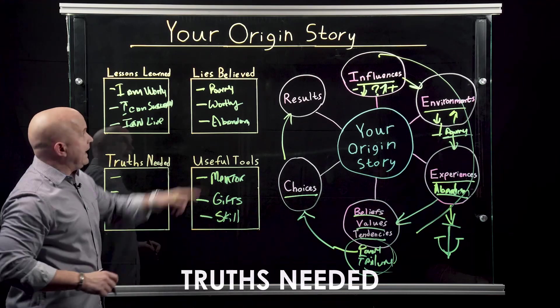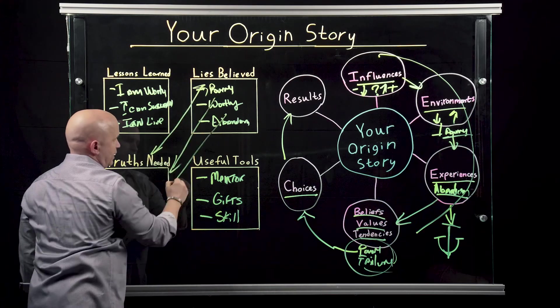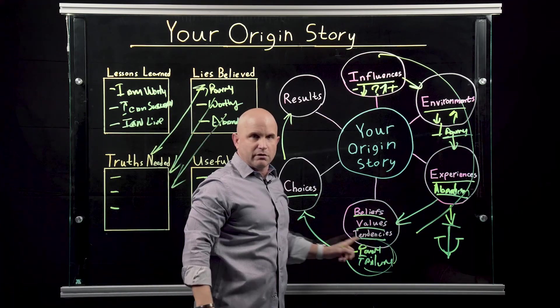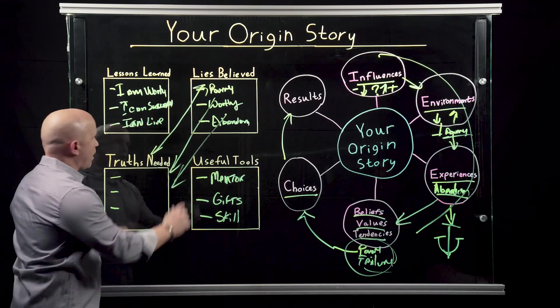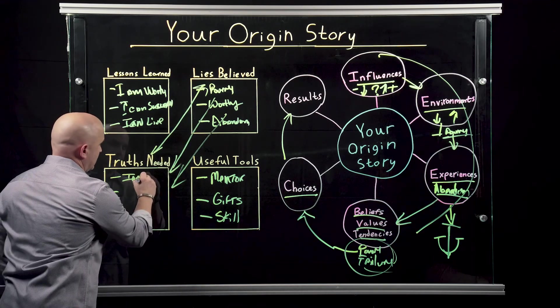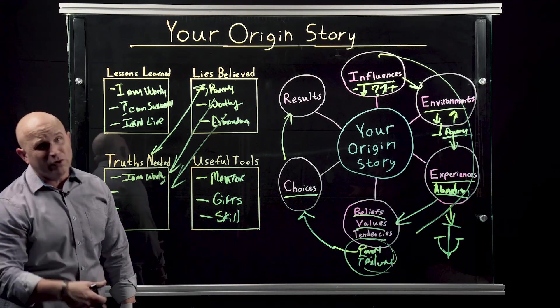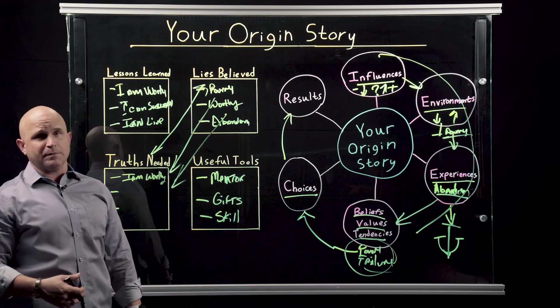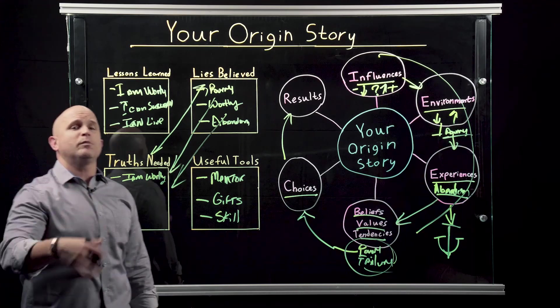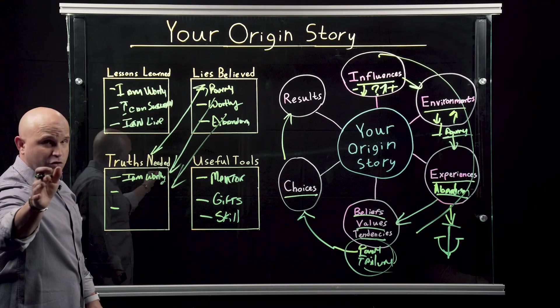Now, truth. Every lie needs a corresponding truth. Every lie needs a corresponding truth. So whatever lie you discover in going back through your origin story will also need a corresponding truth. Again, you saw me do it already. I am worthy. I am worthy. I'm worthy to be here today because I've worked really, really hard. I've done the push-ups. I've studied the books. I've watched the videos. I've gotten the mentorship. I'm worthy to help you get to the same place because I've actually done it. And I want to do that for you because you're worth it.